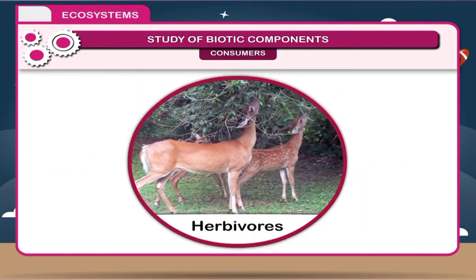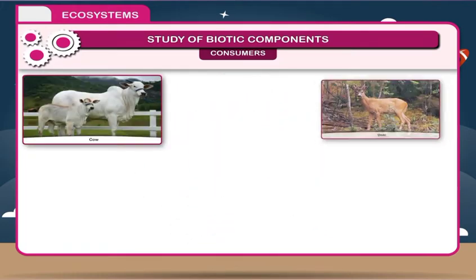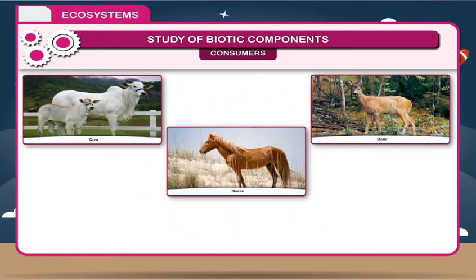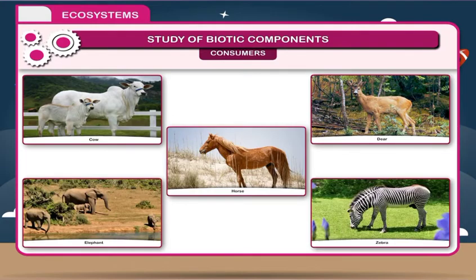1. Herbivores: These animals feed on plants and are called primary consumers. Examples include cow, deer, horse, elephant, and zebra.